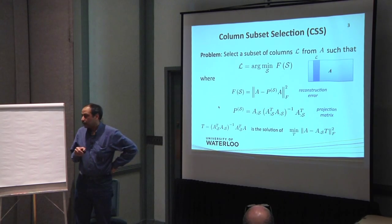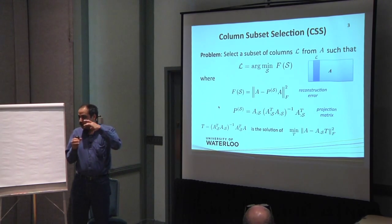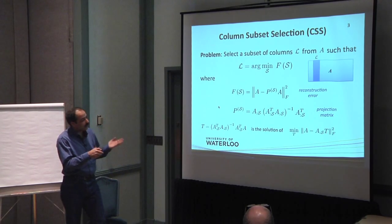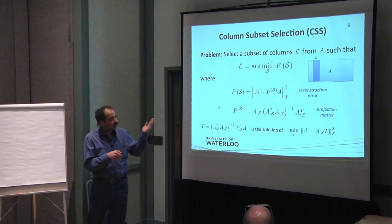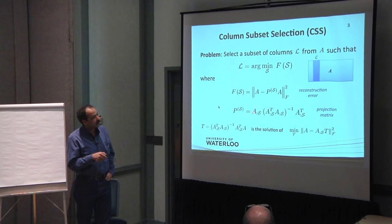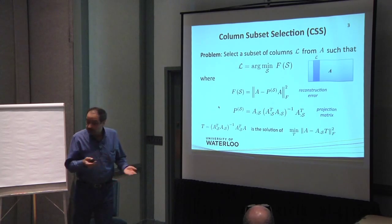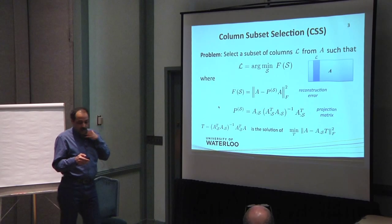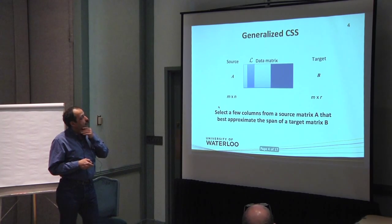If S is known, if we know which subset has been chosen, clearly it has a closed form solution. You can find it in terms of least squares problem and this is the optimum solution if S is known. But of course S is not known and you need to come up with an efficient solution to find it.